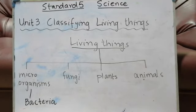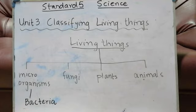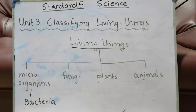The next category is fungi. Fungi are commonly associated with mold, which forms when you leave food for many days. Unlike plants, fungi cannot make their own food — they feed on dead plants and animals. The most common example of fungi is the mushroom.